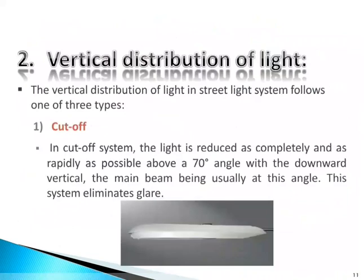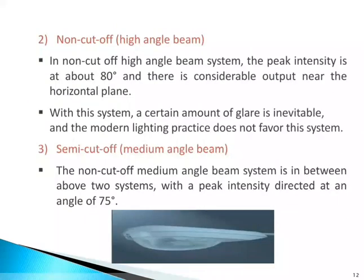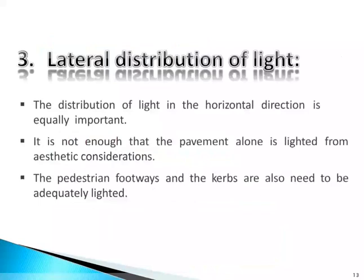Vertical distribution of light in a street lighting system follows one of three types. First, cutoff: in the cutoff system, the light is reduced as completely and rapidly as possible above the 70-degree angle with the downward vertical, the main beam usually being at this angle — this system eliminates glare. Second, non-cutoff or high angle beam: the peak intensity is at about 80 degrees and there is considerable output near the horizontal plane; a certain amount of glare is inevitable and modern lighting practice does not favor this system. Third, semi-cutoff or medium angle beam: this system is in between the above two, with peak intensity directed at an angle of 75 degrees.